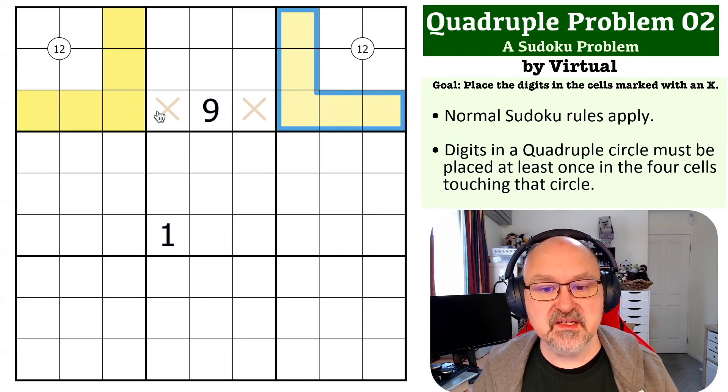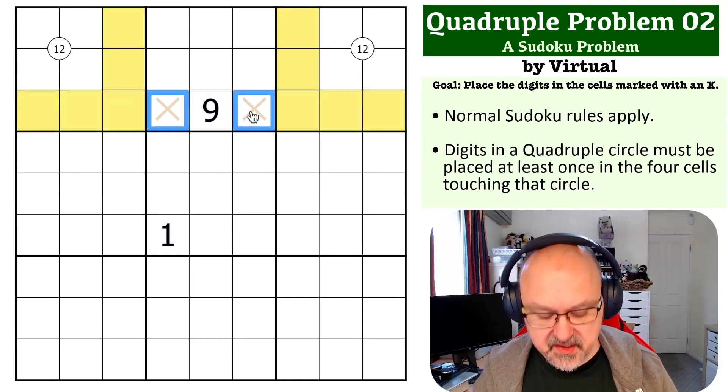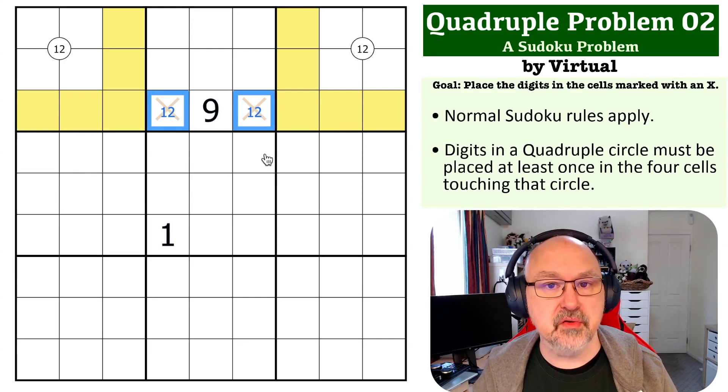So what we now know is that in row three, you cannot put one and two in any of those cells. And this is a nine. So you can't put a one or a two there. So this has to be where the one and the two goes in row three.